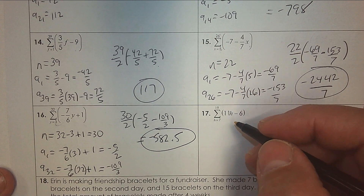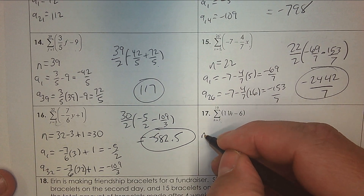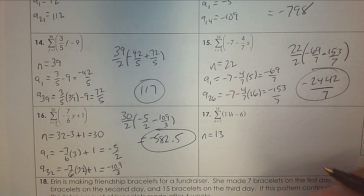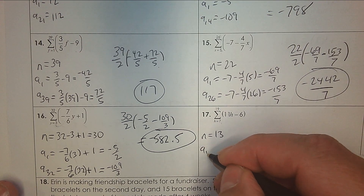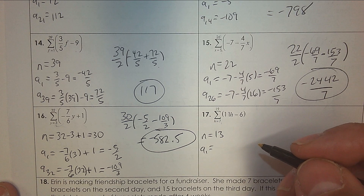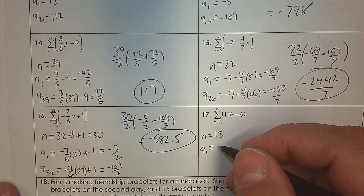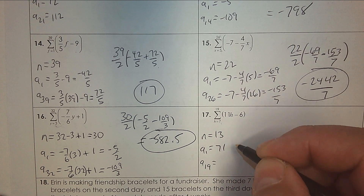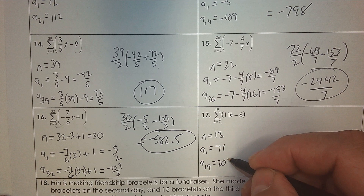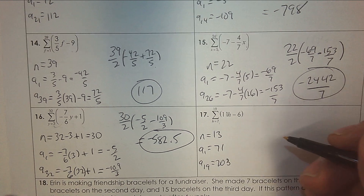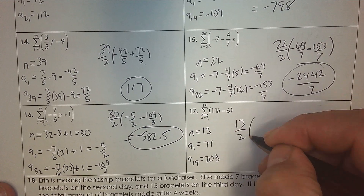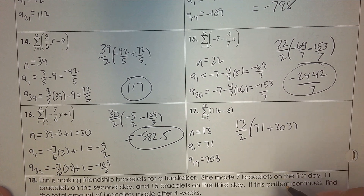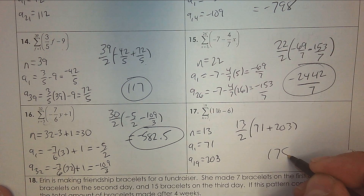Last one — 19 to 7. So subtract: 19 take away 7 is 12. Add one more for the counting principle and you have 13 terms. Plug in 7 for the first term: 77 take away 6. Plug in 19: 11 times 19 take away 6 is 203. How many terms divided by 2, times (first plus last) — 71 and 203. Use a calculator and you get 1,781.